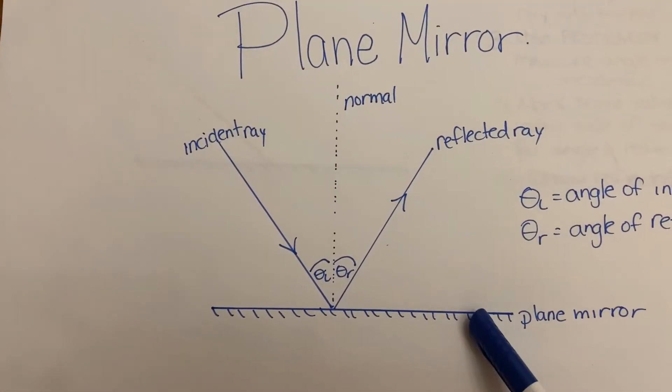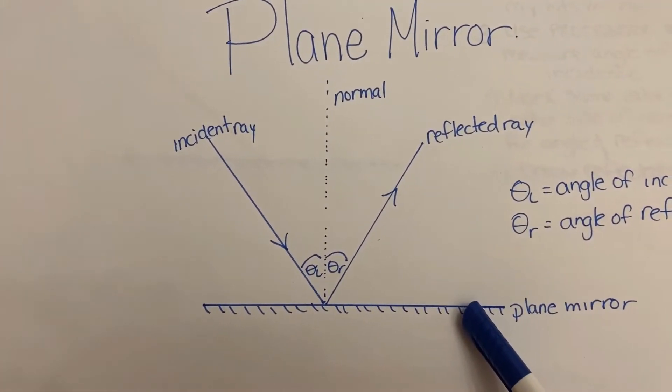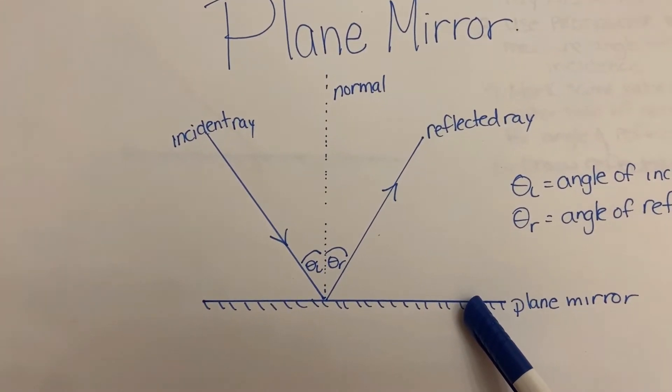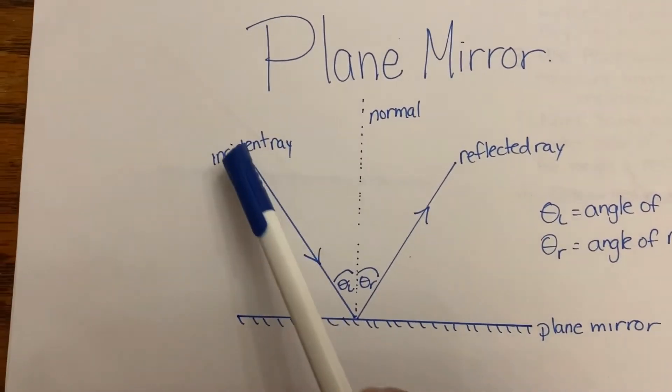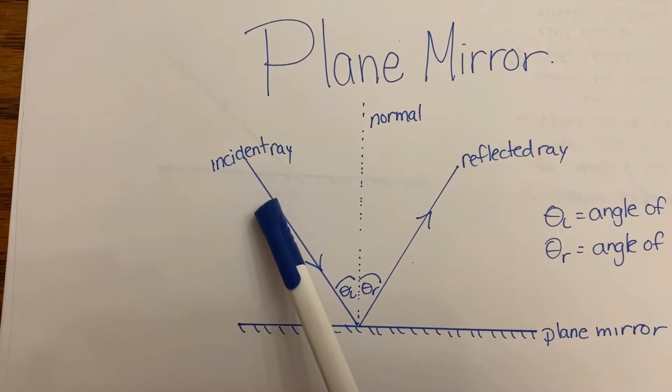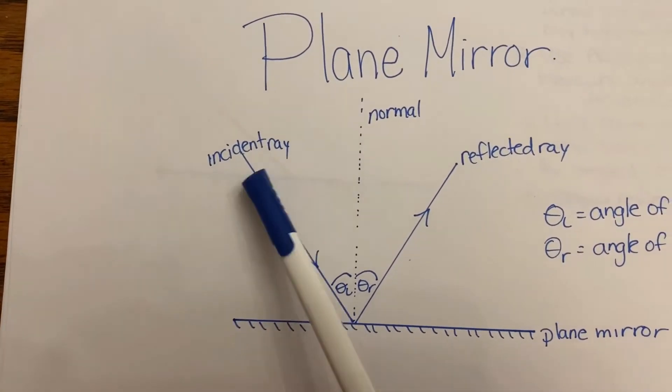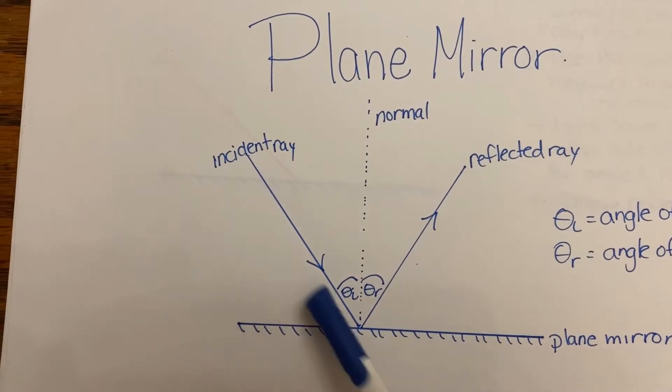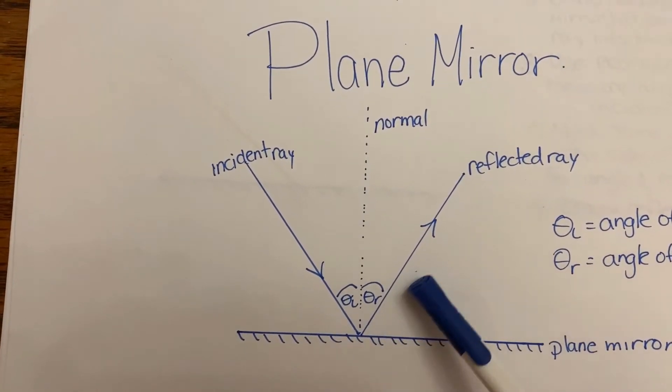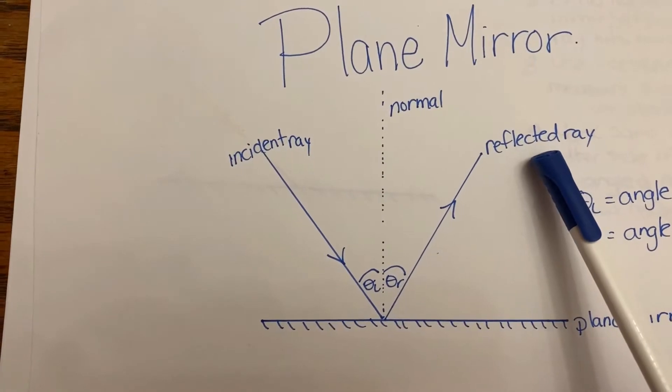When you look at a ray diagram, you start with a plane mirror. That is just a flat mirror that has no curves. The radiation or sunlight or light energy is coming into the mirror, and that is called the incident ray. When it hits the mirror, it bounces back out, and that is called the reflected ray.